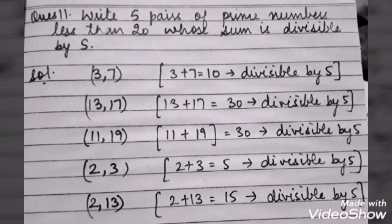Like 3 and 7. 3 plus 7 is 10 and 10 is divisible by 5. 13 and 17 is 30, it is divisible by 5. 11 and 19, if we add them, the answer is again 30 which is divisible by 5.